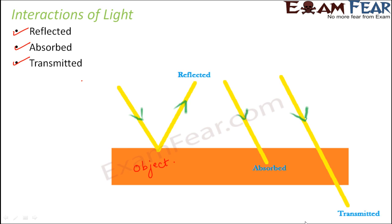In which type of object does all the light get transmitted through it? That happens in transparent objects, because transparent objects allow light to pass through them. In which type of object does light not get transmitted at all? That is the opaque object — in an opaque object light will either get reflected or absorbed. In a translucent object, some part of light will get transmitted, some part will get absorbed, and some part will get reflected.